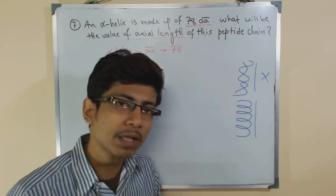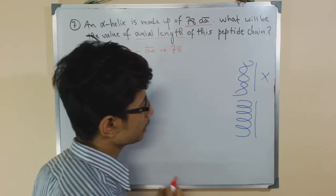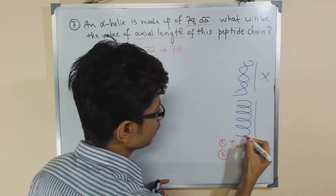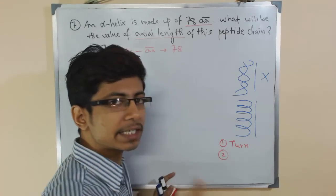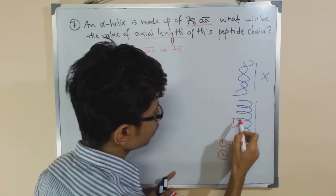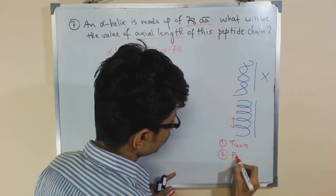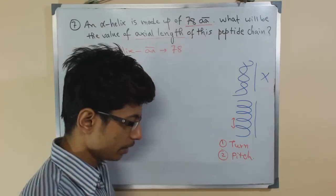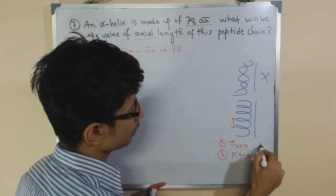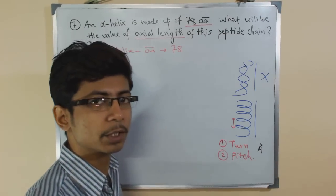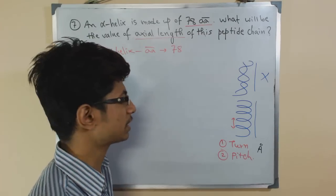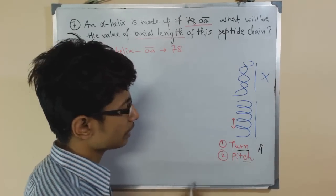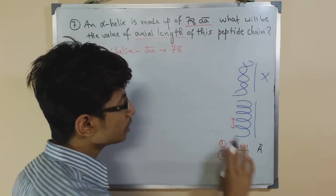All helices are defined by two important parameters. The first is the turn — each time the helix coils around, that is one turn. The second is the pitch, which is the distance between two successive turns. These distances are measured in Angstroms, which is the unit used for very small atomic distances.